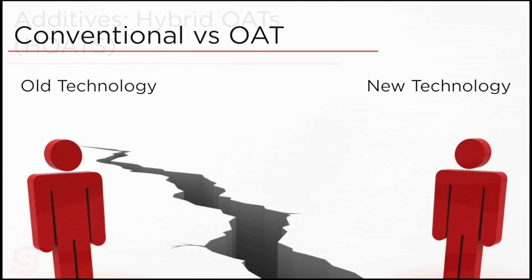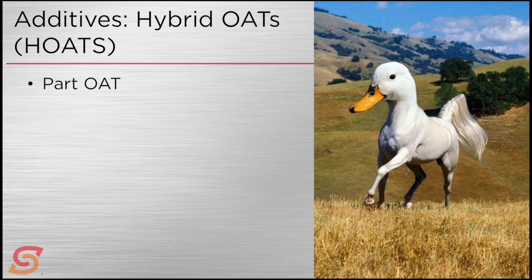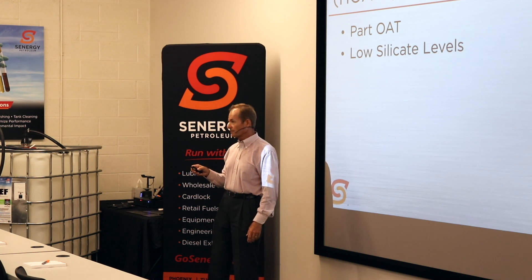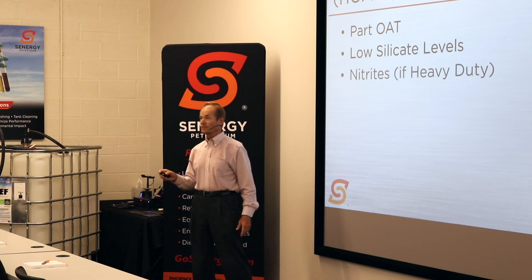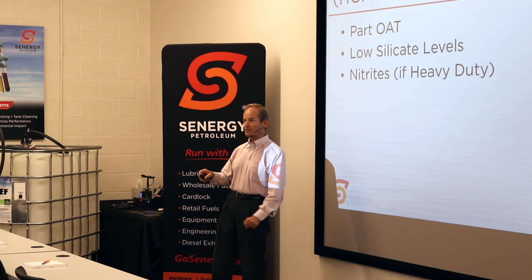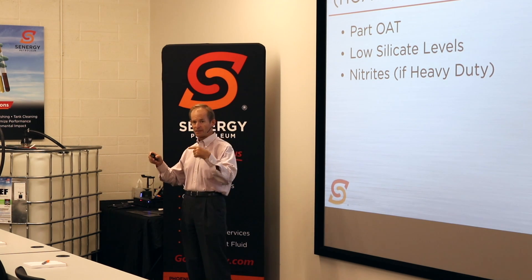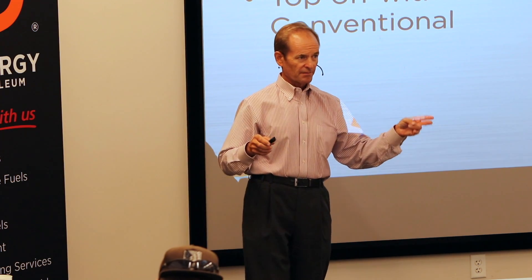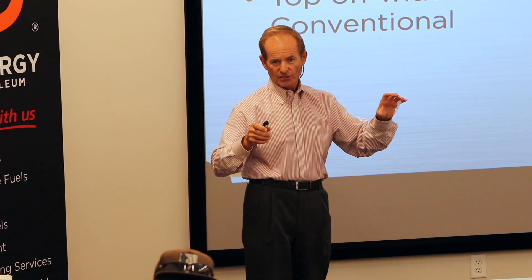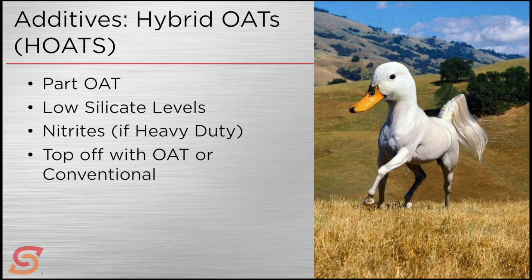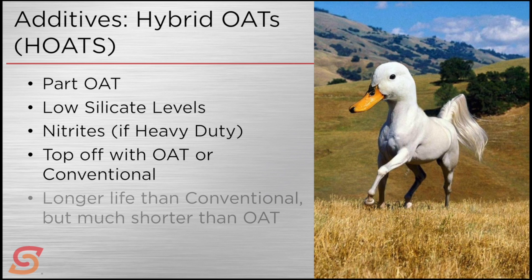So hybrids were developed — hybrid OATs. Part of the formulation is an OAT organic acid going around in there, but it also has a low-level silicate. For heavy-duty trucks it'll have nitrite — and that's important: hybrids still require regular nitrite replenishment for heavy-duty trucks. But hybrids allow you to top off with either OAT or conventional without worrying about bad effects. You get a longer life than conventional, but nowhere near the life you get with a full OAT.